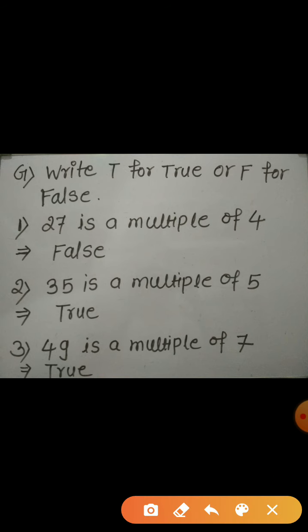Now let us discuss the question number G. Write true or false. The first statement is, 27 is a multiple of 4. No, it's false. 27 doesn't come in the table of 4. Hence, it is false.